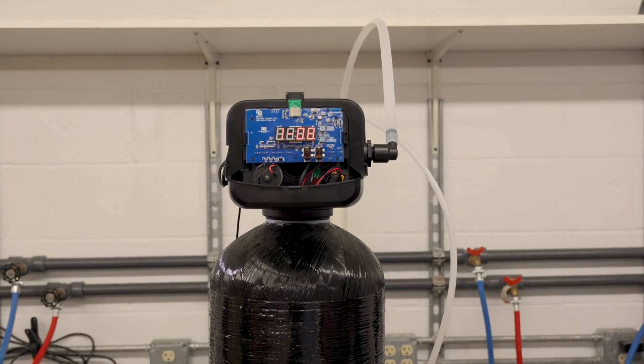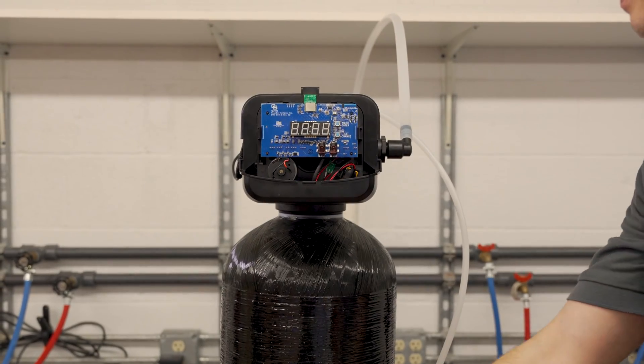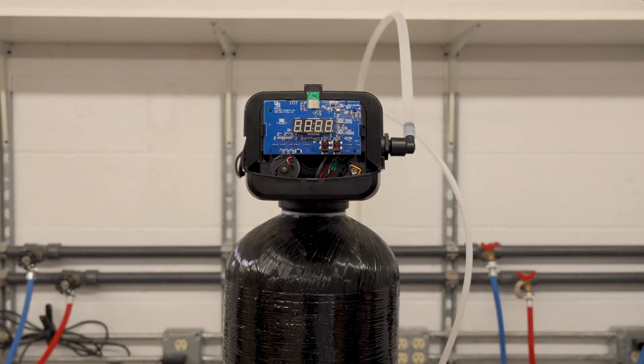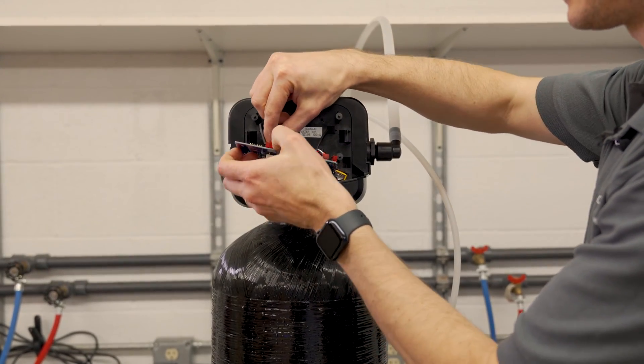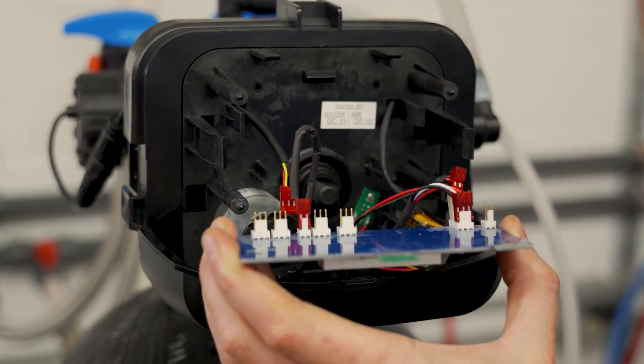Once we're in the backwash position, you can safely disconnect power from the control valve and unplug the battery. Now you'll want to take the circuit board off and disconnect the meter cable and also the power supply.